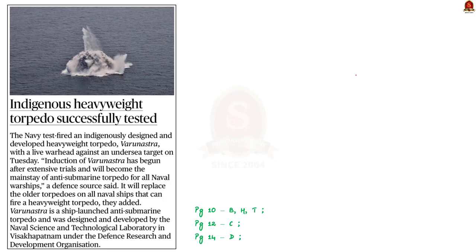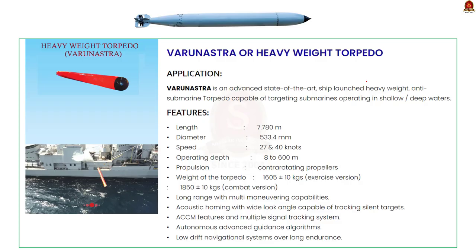Now let us move on to our next article. It says that Indian Navy has successfully test-fired the indigenously developed heavyweight torpedo named Varunastra against an undersea target. Varunastra will replace older torpedoes on naval ships and serve as the primary anti-submarine torpedo. It was designed and developed by the Naval Science and Technology Laboratory in Vishakhapatnam under DRDO. In this discussion, we are going to learn about the Varunastra torpedo. First, we will understand what a torpedo is. A torpedo is like a special underwater missile — it is like a rocket but it moves underwater instead of in the sky. It is shaped like a cigar. Torpedoes are launched from different places like submarines, surface vessels, or even airplanes, and are made to explode when they hit other ships or submarines.